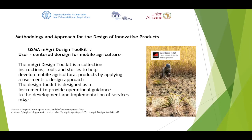We have an example from GSMA: the M-Agriculture Design Toolkit, which is a user-centered design approach for mobile agriculture. GSMA has done a lot of work on mobile for agriculture and mobile for health. This design toolkit is a collection of instructions, tools, and stories to help develop mobile agriculture products by applying a user-centric design approach. It was designed as an instrument to provide operational guidance for the development and implementation of services in mobile agriculture.